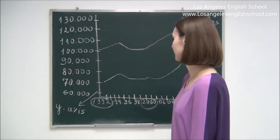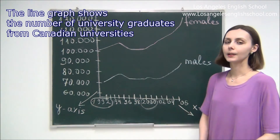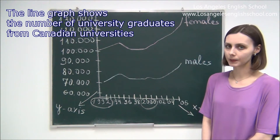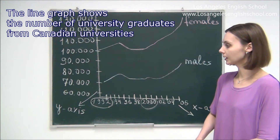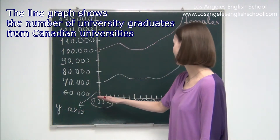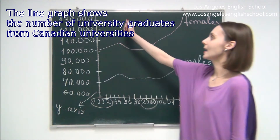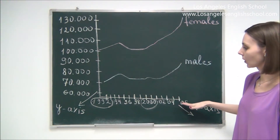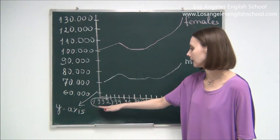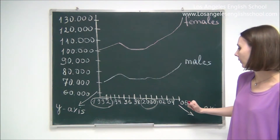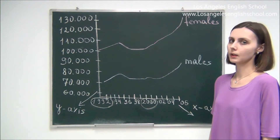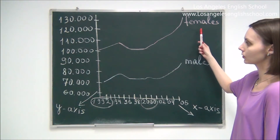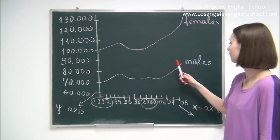Here on the board we see a line graph and this line graph shows the number of university graduates from Canadian universities. You can see we have a Y axis and X axis. The Y axis shows the number of university graduates and the X axis shows the years between 1992 and 2006. You can also see two solid lines.